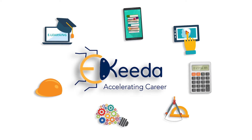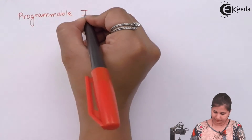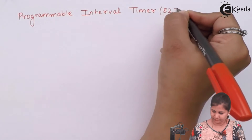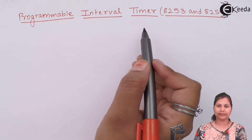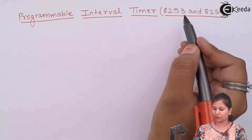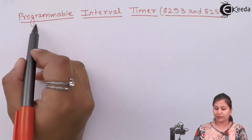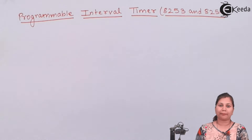Hello friends. In this video we will study about the two ICs 8253 and 8254, which are known as the Programmable Interval Timer. We will also study the similarities and differences between the two ICs. The Programmable Interval Timer is provided by these two ICs, 8253 and 8254, and it is used by microprocessors while performing timing and counting operations.